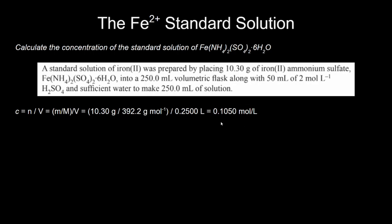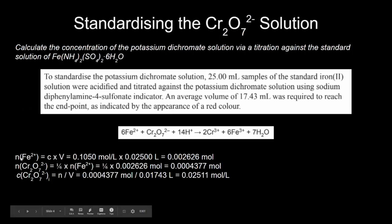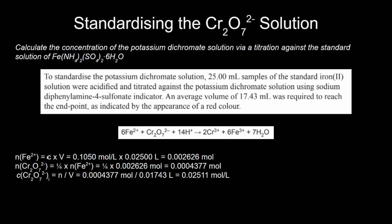Now we're going to plug this concentration of iron(II) into the next step where we will determine the initial concentration of dichromate. I'm going to calculate the moles of iron(II) involved in this standardization titration by taking the concentration of iron(II), which we just figured out, and multiplying it by the volume used in this titration, which is 25 mL. We get this number of moles of iron(II).